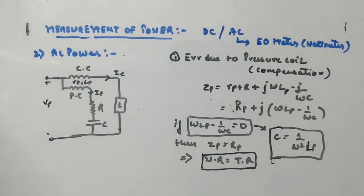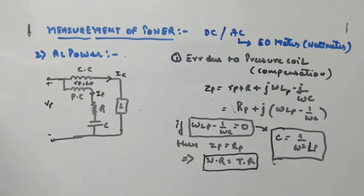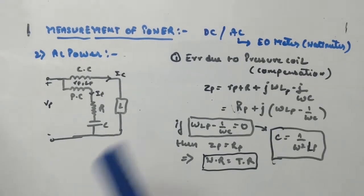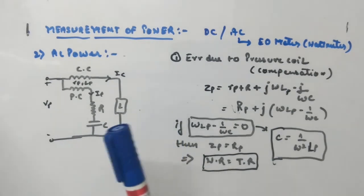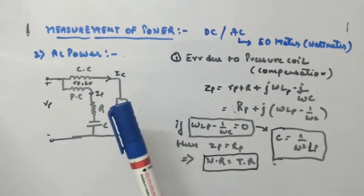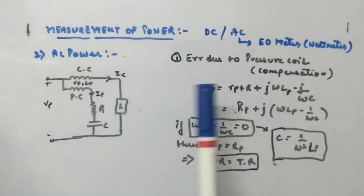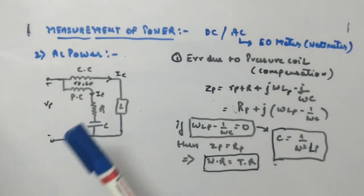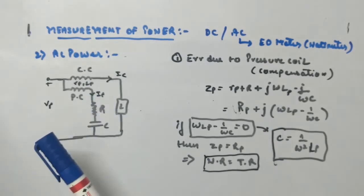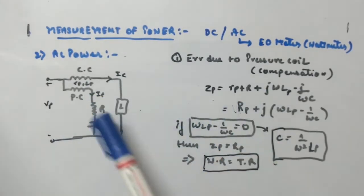We have seen that including an inductor in the pressure coil produces an error in the wattmeter reading. The wattmeter gives true reading plus some error quantity, depending on whether the load is leading or lagging. We don't want that error term, so it should be compensated. The inductor effect should be compensated, and that is done by connecting a capacitor in series.